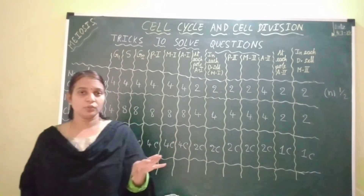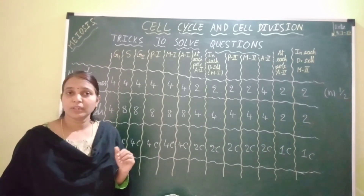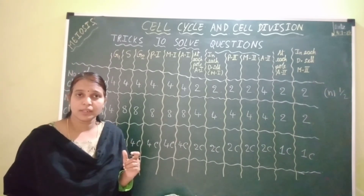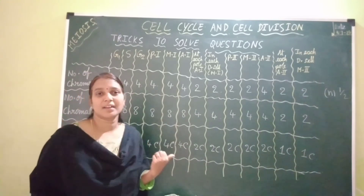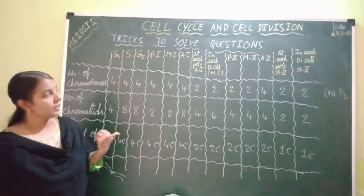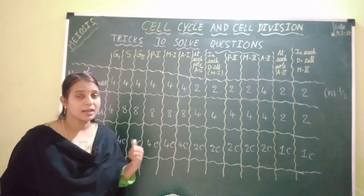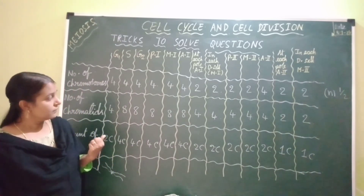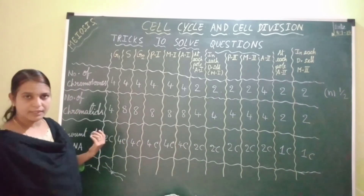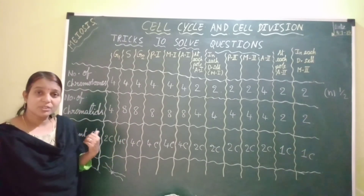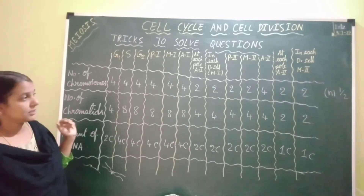A few key points to remember: The actual phase of reduction in chromosome number is anaphase 1. The phase during which the number of chromosomes doubles but the number of chromatids remains the same is anaphase 2. The phase during which the amount of DNA doubles — and the number of chromatids also doubles while the chromosome number remains the same — is S phase.